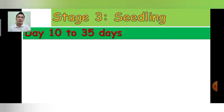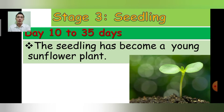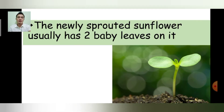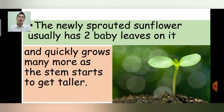Stage 3: Seedling — Day 10 to Day 35. The seedling has become a young sunflower plant. This is its development stage to gain as much growth as it can. The newly sprouted sunflower usually has 2 baby leaves on it and quickly grows many more as the stem starts to get taller.